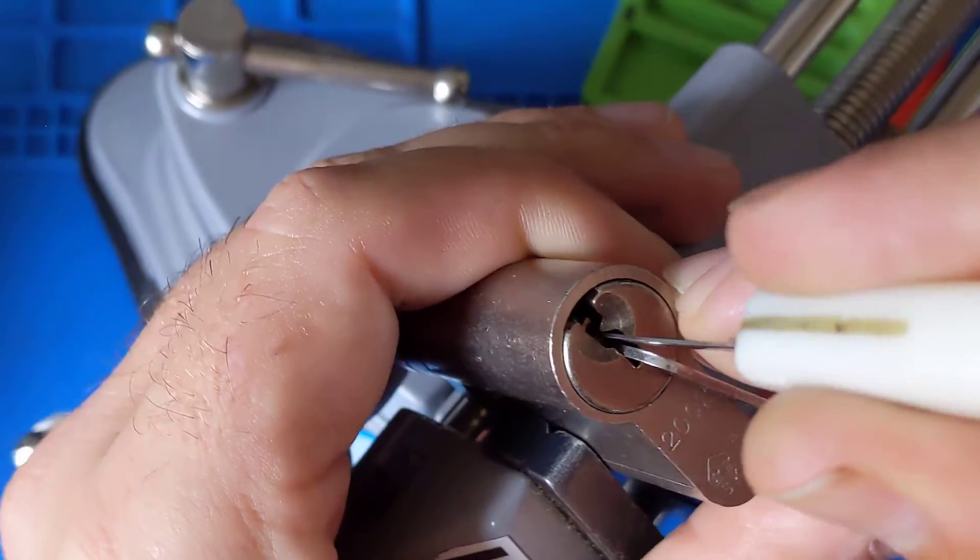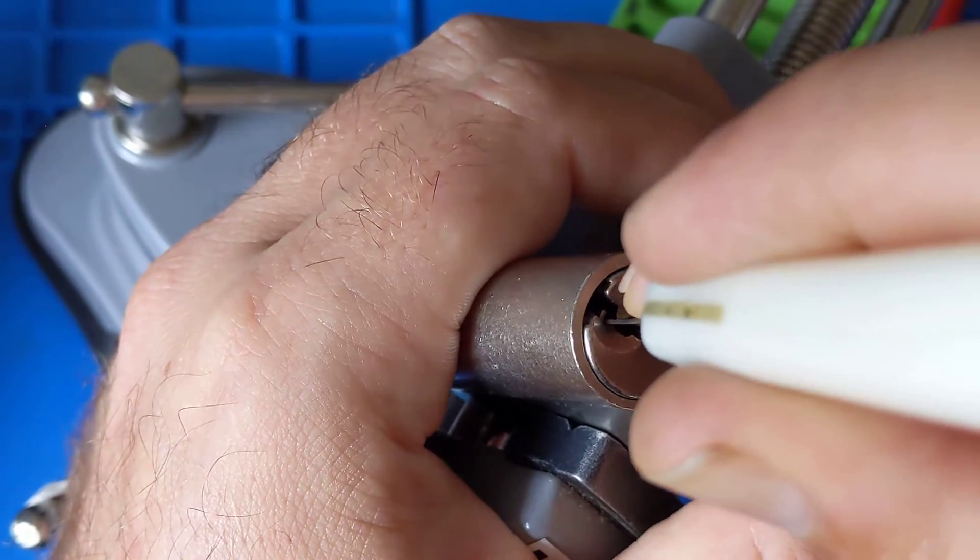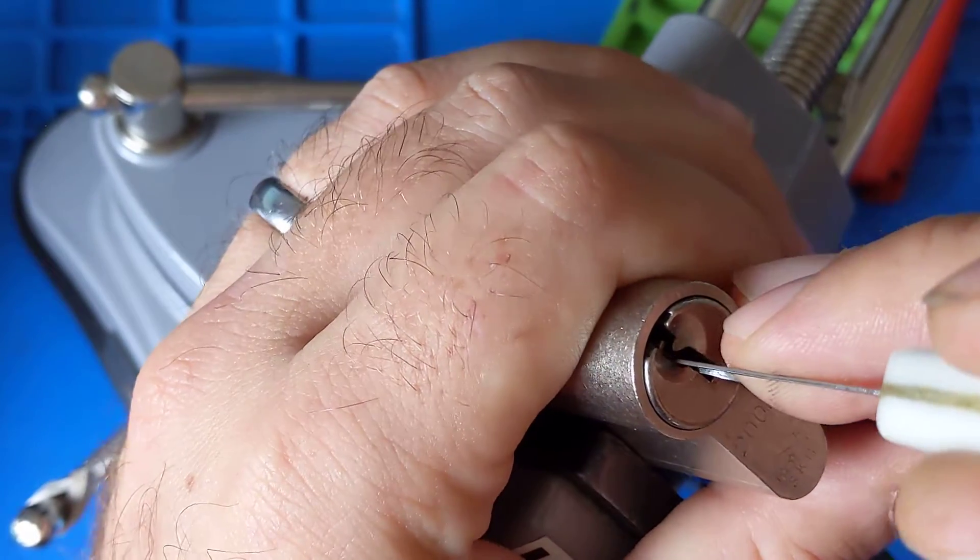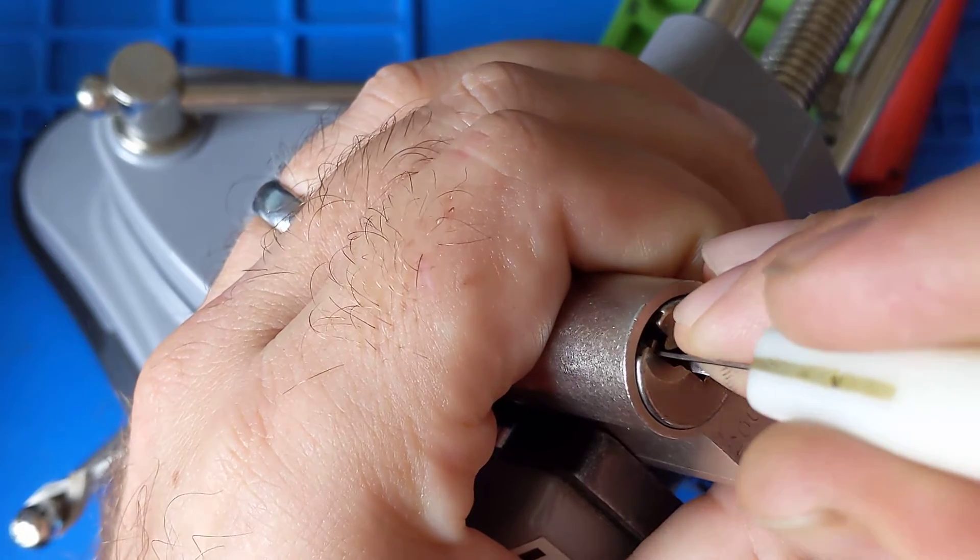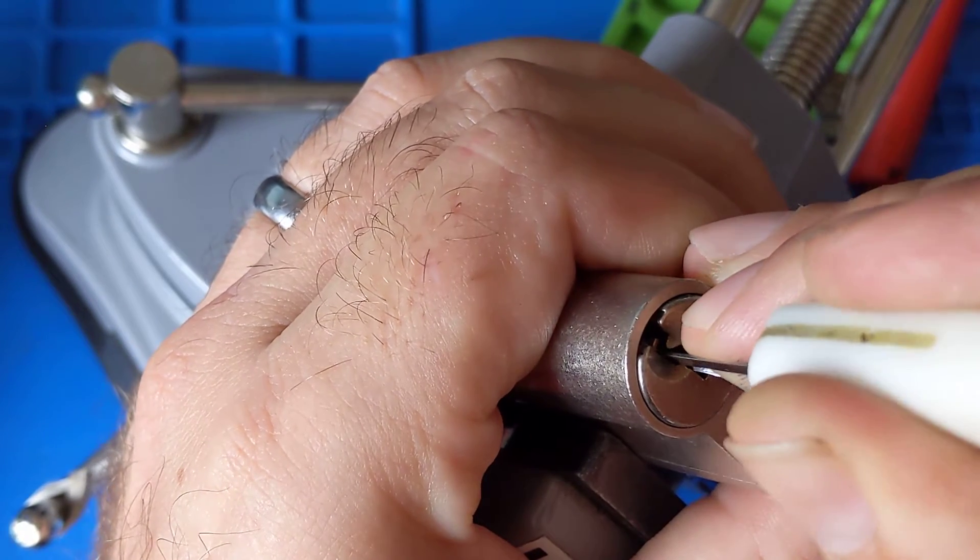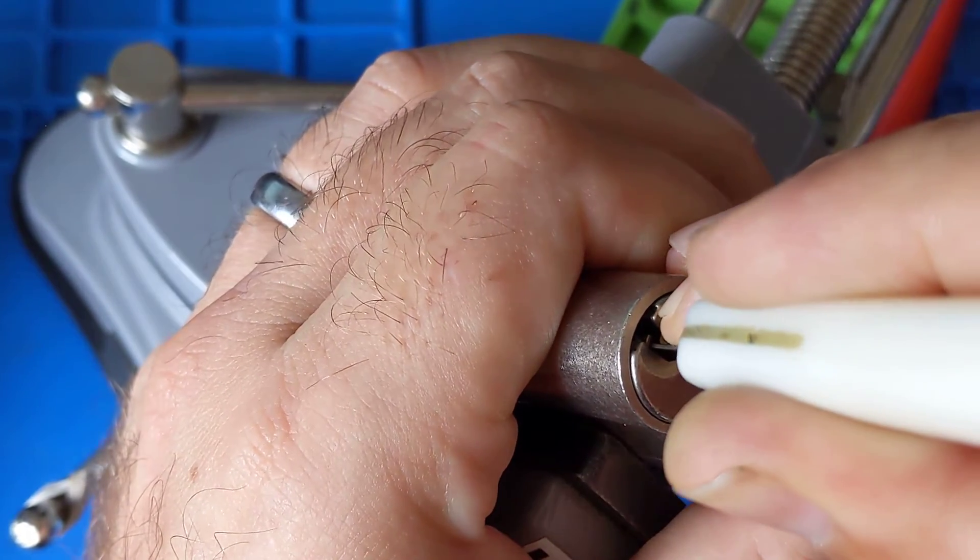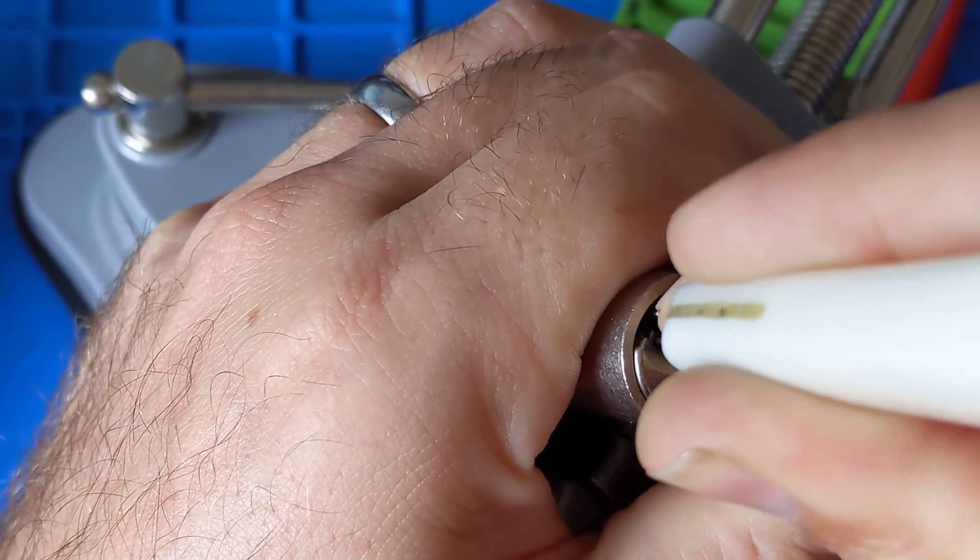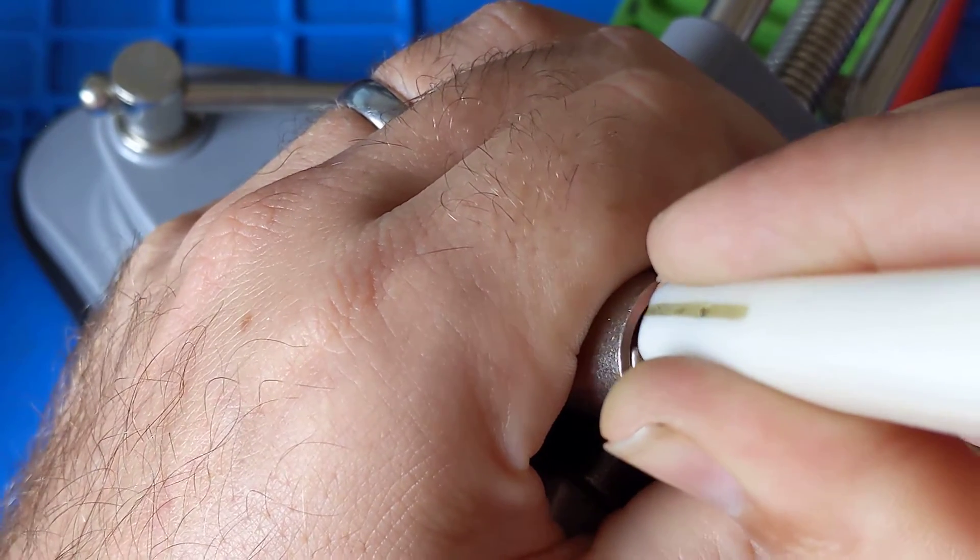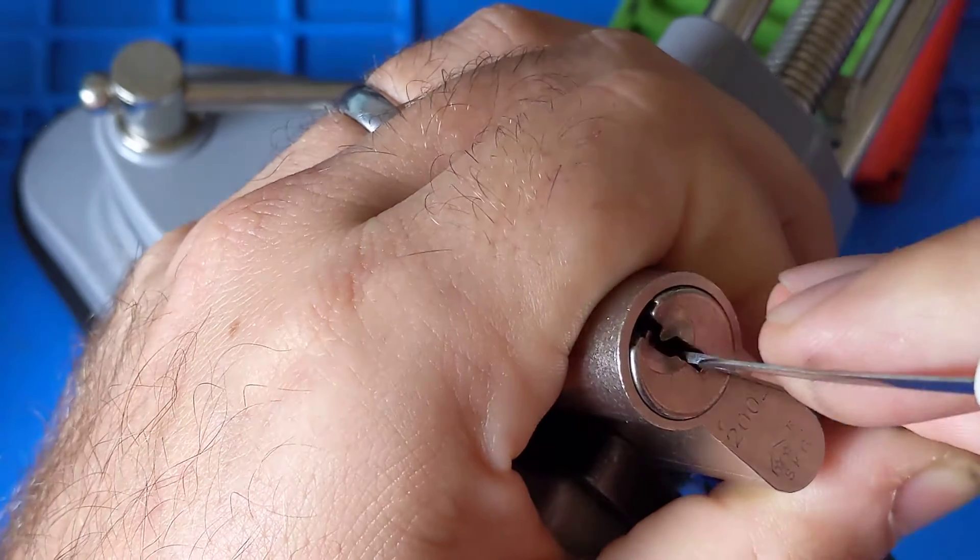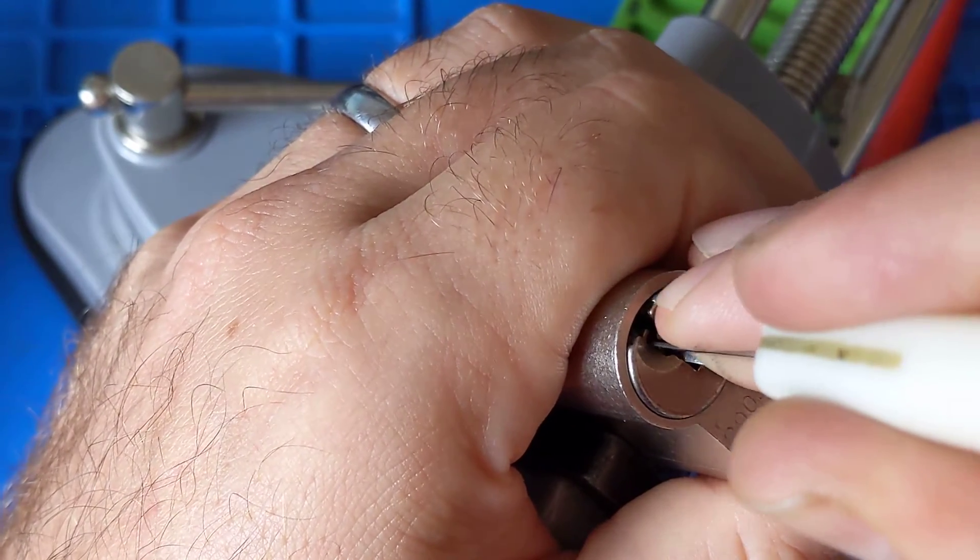So let's have a go and see if we can pick this. Nothing on one, a crunch out of two. Nothing on three. A whopping great crunch out of three, four and five. And let's go back through it.